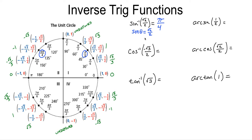For the inverse cosine of negative root 3 over 2, normally there are two places where the cosine equals negative root 3 over 2 — it could be at 7 pi over 6 or at 5 pi over 6. But since the inverse cosine is restricted to the first and second quadrants, the only possible answer is 5 pi over 6.